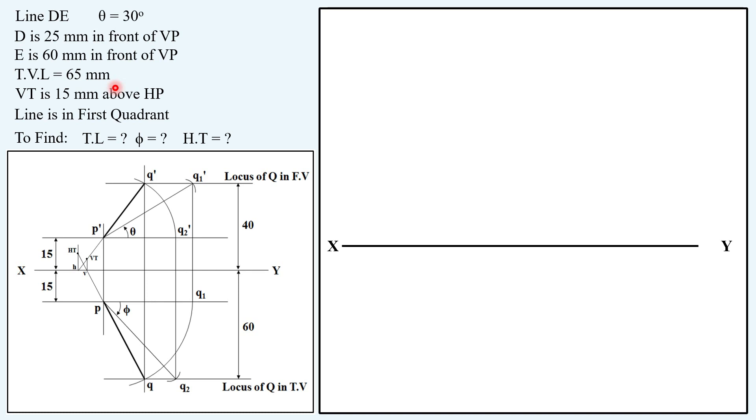Starting with the first XY line. Drawing a vertical projector. Taking a distance 25 mm in front of VP and locating the top view of D. Then, taking another distance, that is 60 mm in front of VP from the XY line, and locating a locus of point E in top view.